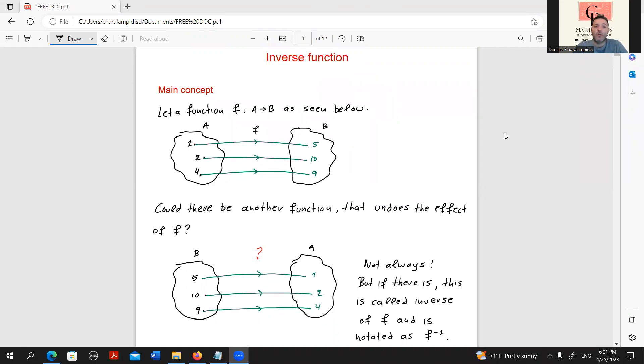Let's assume that we have a function f from A to B. As you see below in the first diagram, we have a function that takes values from set A and relates them in a unique way, since it is a function, to values of set B. For instance, 1 is related to 5, 2 is related to 10, and 4 is related to 9 respectively.